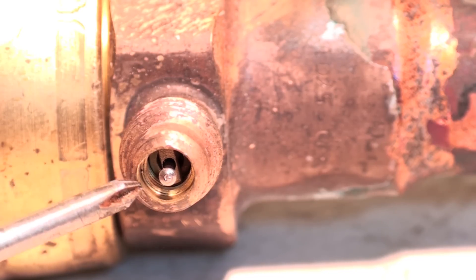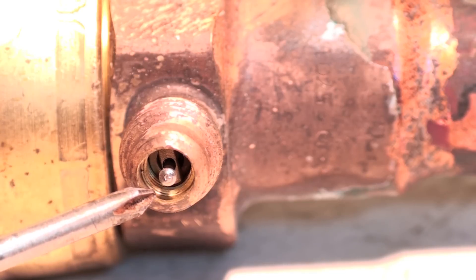Now you can see the threads inside there that the Schrader fits in. If I tighten that cap down it will mushroom this edge right here and it will cover up the threads and will not allow the Schrader to come back out.